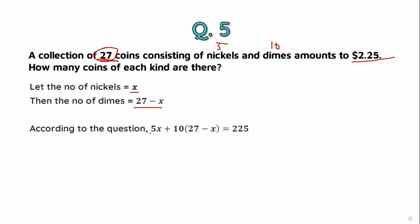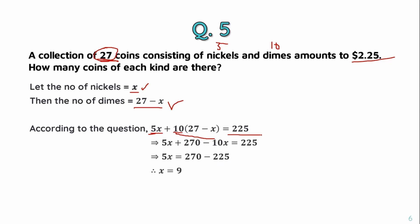According to the question: 5 times x plus 10 times (27 minus x) equals 225 cents (i.e., $2.25). Solving this equation gives the number of nickels as 9 and the number of dimes as 27 minus 9, which equals 18.